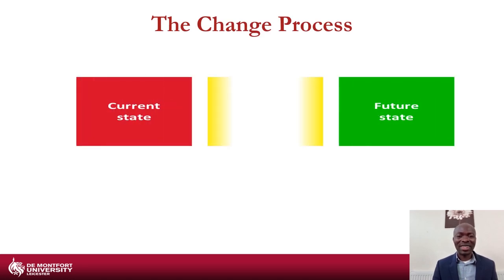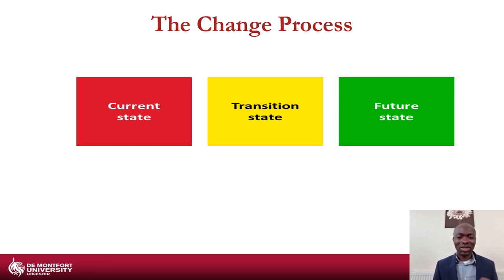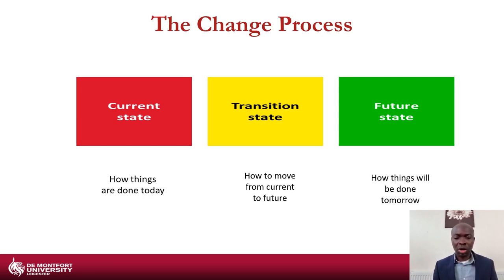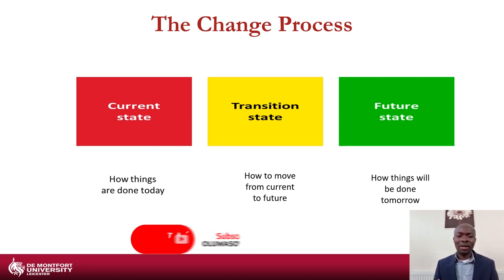The change process involves three stages: the current state, the transition state, and the future state. When looking at the current state, you're looking at how things are done today. In the transition stage, you're thinking about how to move from your current to your future state. Then you look at the future state — how things will be done tomorrow. For example, if there is a declining stage in the organisation, businesses think about how to transition to a point where sales figures are rising and the business is profitable and sustainable.